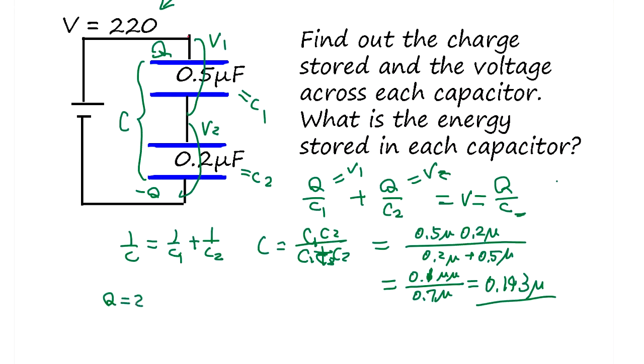Let me pull out the calculator. 220 times 0.143 equals 31.46 microcoulombs. Okay.